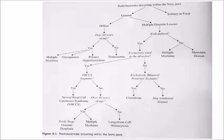Radiolucency occurring within the bony jaws can be classified as general or solitary. A general lesion can be either diffuse or multiple discrete lesions. A solitary or focal lesion is a separate category.